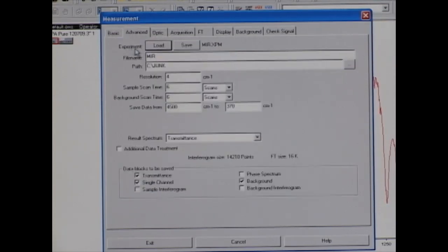We already went through the experiment, which is already loaded. We went to the file name, which is what you want your sample to be called. So I will put ODPA, and then select the path you would like.